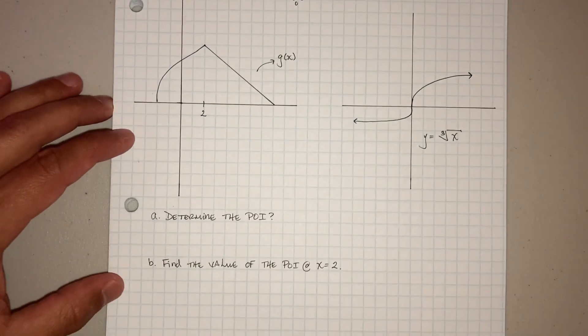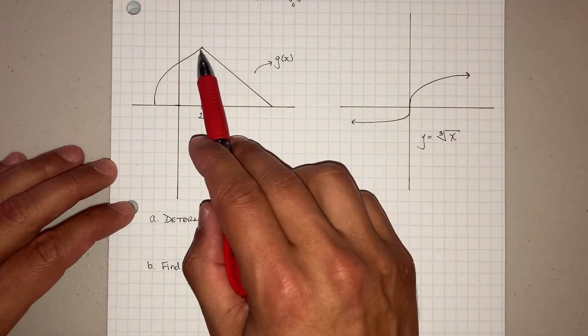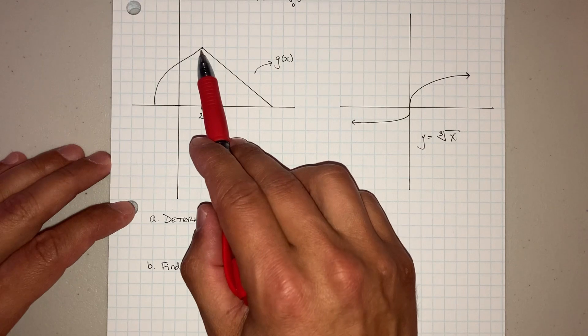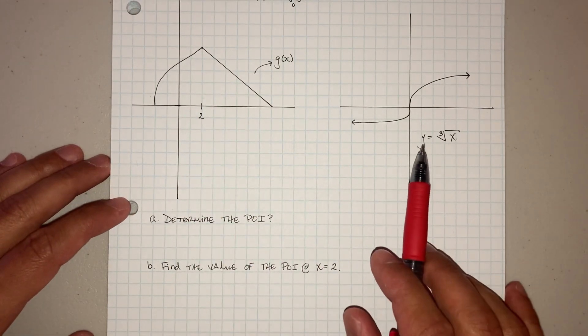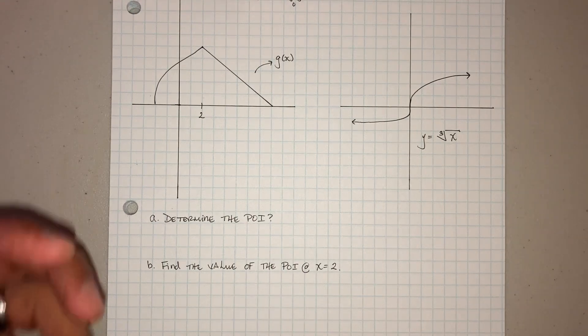Now, a lot of times they'll say, determine the point of inflection. And a lot of students say, is at x equals 2, is that a point of inflection? And they'll say, no, we can't because it's a cusp, right? You can't find the derivative.